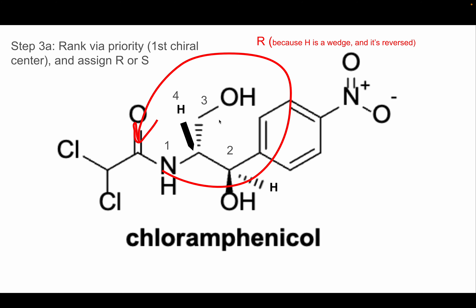When we have a tie between the two carbons, we look at what each carbon is bonded to. Whichever one has a more significant group coming off of it wins. Here we have an implied hydrogen and an oxygen attached to this carbon. Going the other way, it's carbon, hydrogen, oxygen — but because there's that extra carbon here, this group wins second priority, and the other group gets third priority because it doesn't have that.